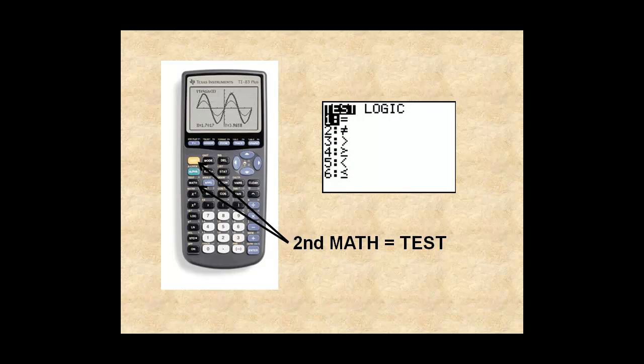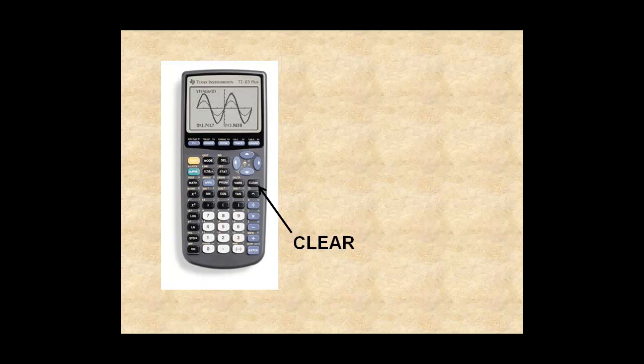Press Clear to return to the main screen. Above the math key in green is the capital letter A. If you press the green alpha key and then the math key, you get the capital letter A.